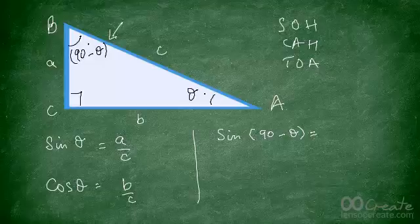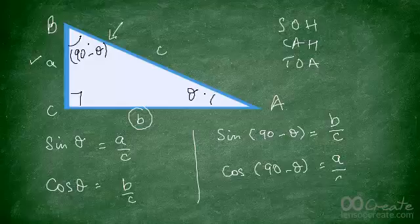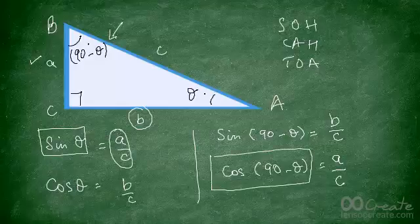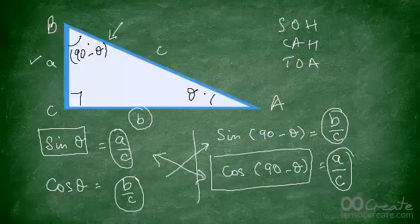Sine is opposite over hypotenuse, so the side opposite 90 minus theta gives us sine of (90 minus theta) equal to b over c. Cos of 90 minus theta — cos is adjacent — so the side adjacent to this angle is a, giving us cos of (90 minus theta) equal to a over c. Notice that sine of theta was a upon c and cos of (90 minus theta) is also a upon c, and similarly cos of theta was b upon c and sine of (90 minus theta) is also b upon c.